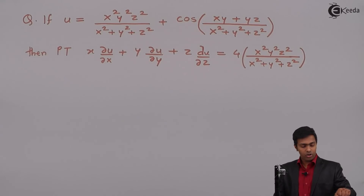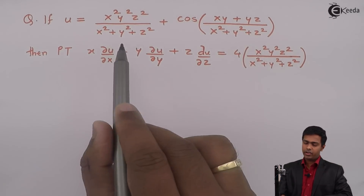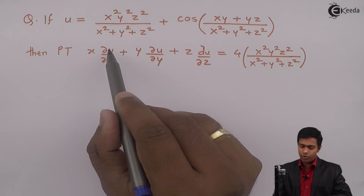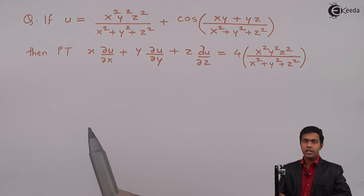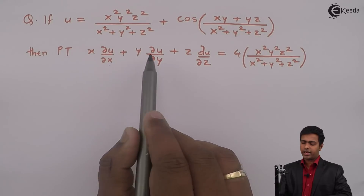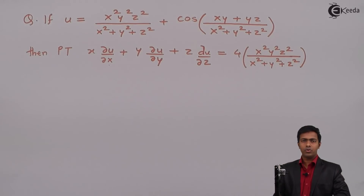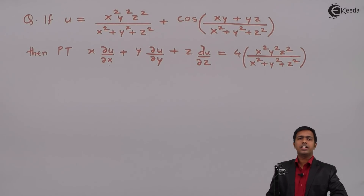To prove the given result, we have two options. The first option is to differentiate u with respect to x, y, and z partially, substitute each value, multiply by x, y, and z respectively, and simplify. However, this is a lengthy method. So we will use the second method, which is based on Euler's theorem.